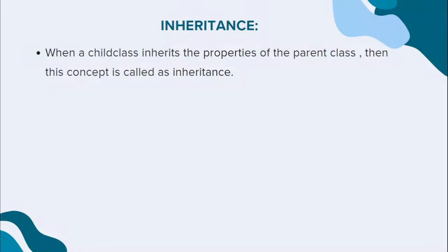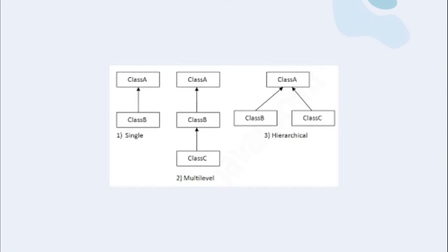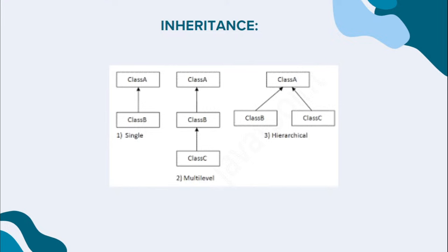We are going to discuss inheritance, which is one important OOP concept. Java is based on object-oriented programming systems, where everything is based on classes and objects. Whenever a child class inherits the property of the parent class, this concept is called inheritance.